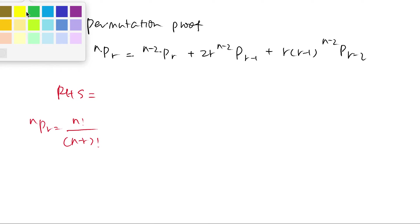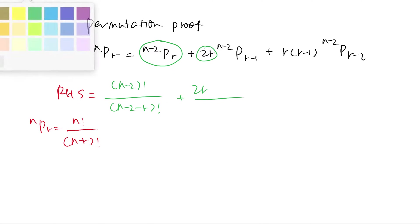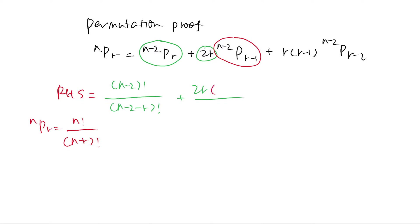So the first one: (n-2)Pr equals (n-2) factorial over (n-2-r) factorial. And then we have (n-2)P(r-1) which is (n-2) factorial over (n-2) subtract (r-1), all factorial.